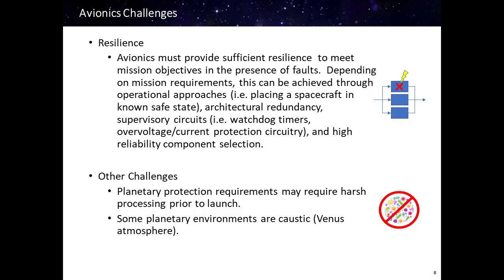Another challenge is the need for resilience. Avionics must provide sufficient resilience to meet mission objectives in the presence of faults. Depending on mission requirements, this resilience can be achieved through operational approaches — for instance, placing a spacecraft in a known safe state when a fault occurs — architectural redundancy such as triple modular redundancy illustrated to the right, supervisory circuits such as watchdog timers and overvoltage and current protection circuitry, and selection of high reliability components.